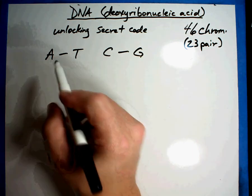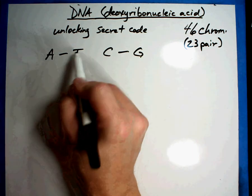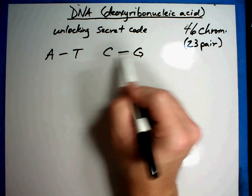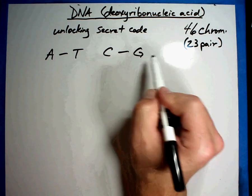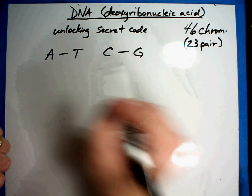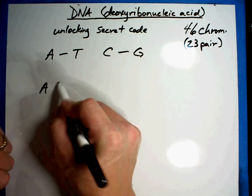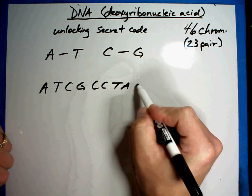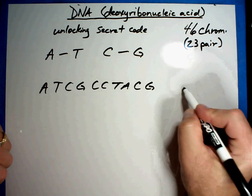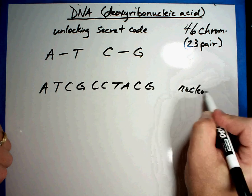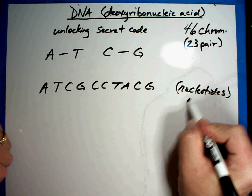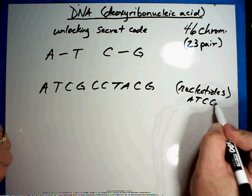Now the easy way to remember it is A and T both have straight lines so they go together. C's and G's are curved letters so they go together. So that's an easy way to remember it. Now if you take a piece of DNA, I'm just picking some what we call nucleotides, just a word that sometimes they use. Nucleotides are going to be A's, T's, C's, and G's.